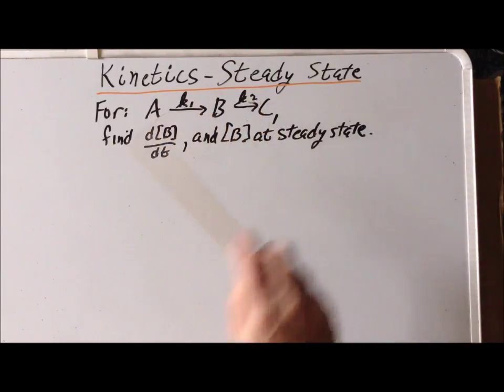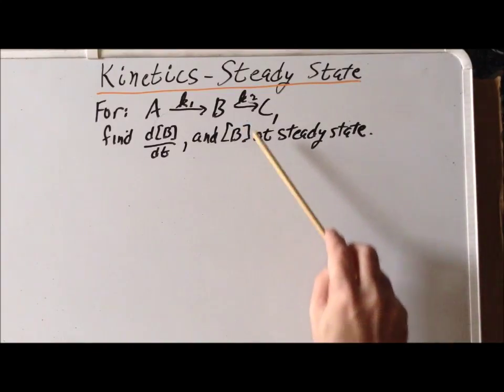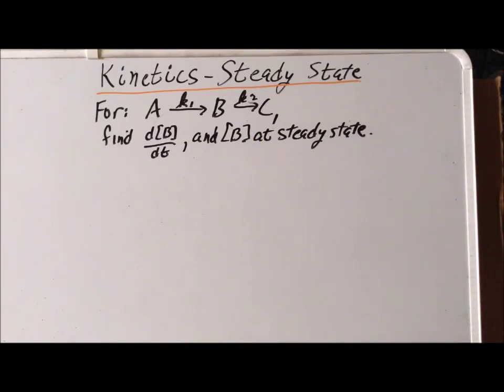Assume that these reactions are first order. Now we would like to derive an expression to find the rate of change of the concentration of B, and then also an expression for the concentration of B at the steady state.